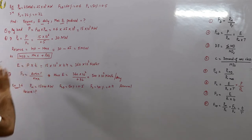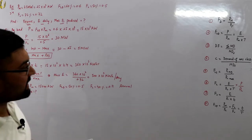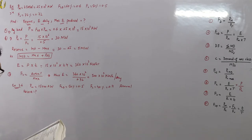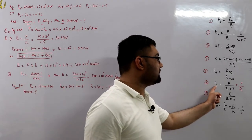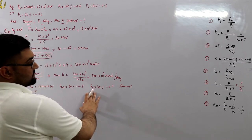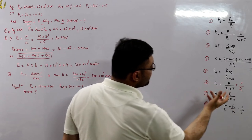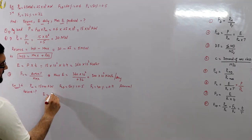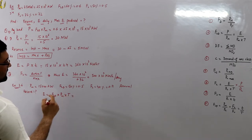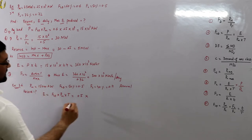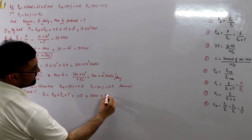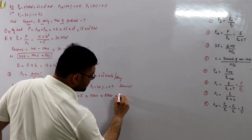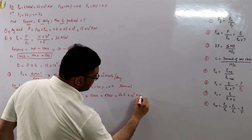The installed capacity can be found from the capacity factor. For the formula, we need energy E, which we find from the load factor: E = FLD × maximum demand × time = 0.5 × 15,000 × 8,760 hours = 65.7×10⁶ kilowatt-hours per annum. Now we can calculate installed capacity PC.